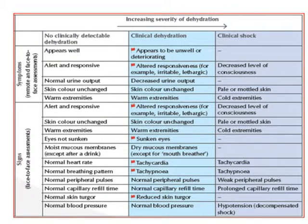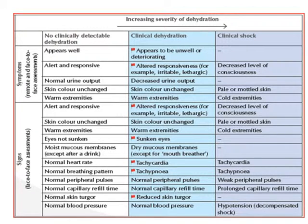We can see in the table the clinical features for each level. With no clinically detectable dehydration, the child appears well, alert, responsive, with normal urine output and warm extremities. With clinical dehydration, the child appears unwell, with altered responsiveness, decreased urine output, but extremities still warm. When the child goes into clinical shock, there is decreased level of consciousness, pale and mottled skin, and cold extremities.